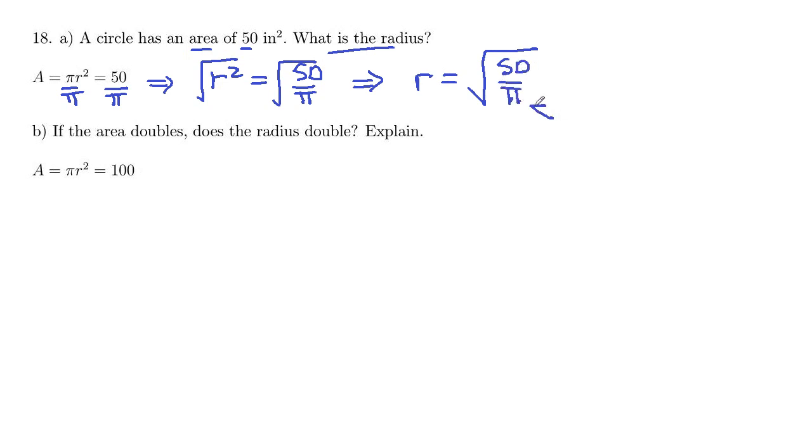And then go ahead and use several decimal places there, 3.14159, unless you have a pi button on your calculator. And I got approximately 3.99 inches to two decimal places.